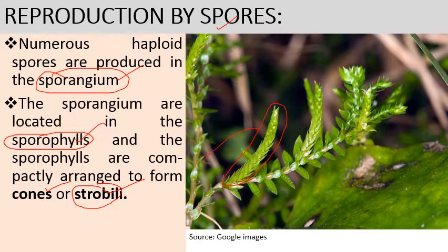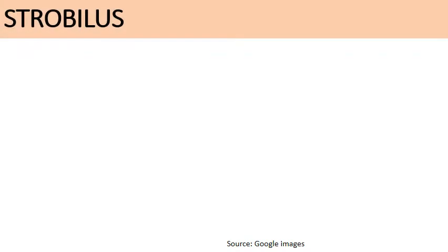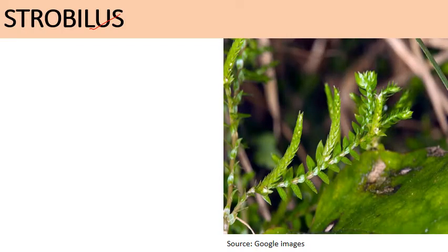The strobilus is a compact structure formed by the arrangement of sporophylls which bear sporangia and produce spores. Mostly strobili are produced terminally on the side branches, and all Selaginella species form strobili or cones.